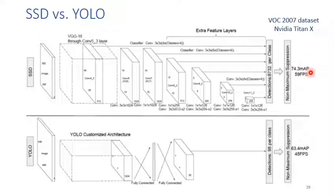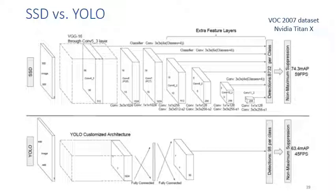SSD can achieve very high FPS on NVIDIA Titan X. Compared to YOLO v1, which only has 98 detections per class — 49 grid cells with 2 bounding boxes each — SSD has much more object candidates per class, giving it higher mAP. YOLO keeps improving and now also includes the feature pyramid. Different architectures borrow ideas from each other and become more and more similar.